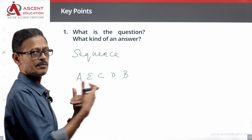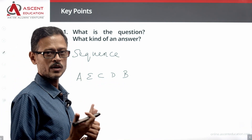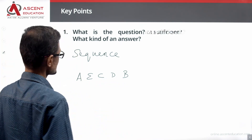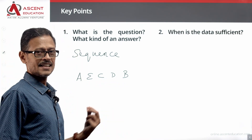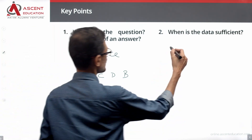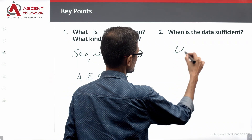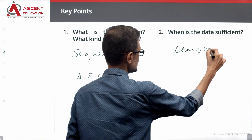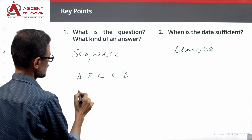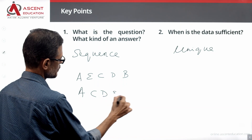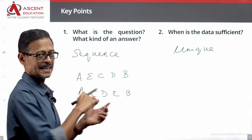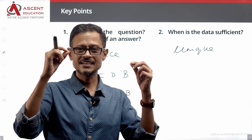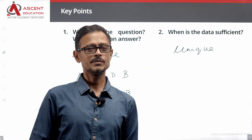The data is sufficient if you are able to identify and come up with a unique sequence. If you have the exact unique sequence, then the data is sufficient.